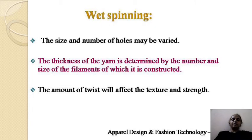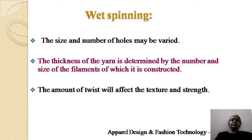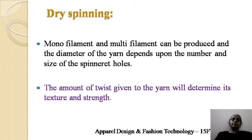The size and number of holes may be varied. Depending on the diameter of the hole, the yarn produced will be used for many purposes. The thickness of the yarn is determined by the number and size of the filaments of which it is constructed. The amount of twist will affect the texture and the strength — higher twist gives different textures and varying strength depending on the amount of twist given to that particular yarn.